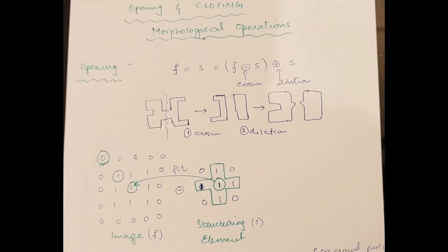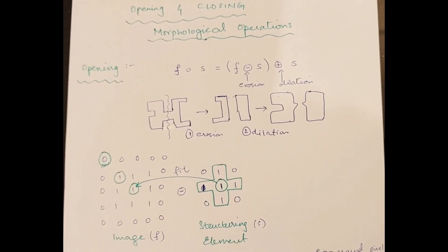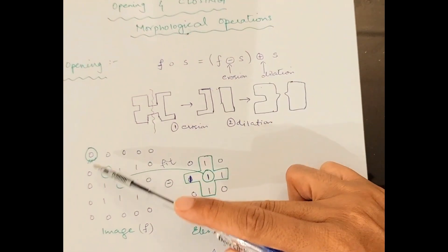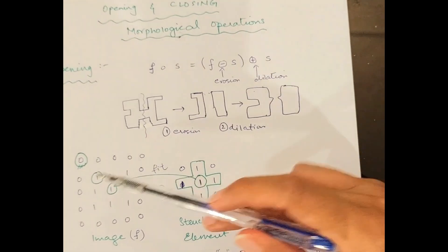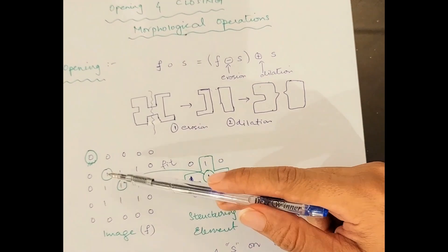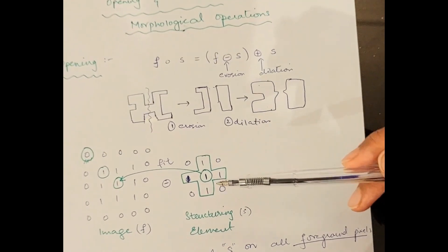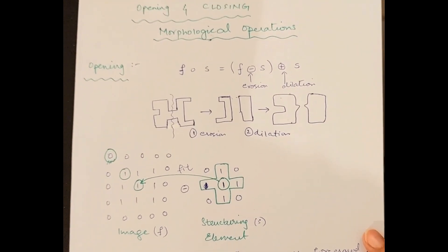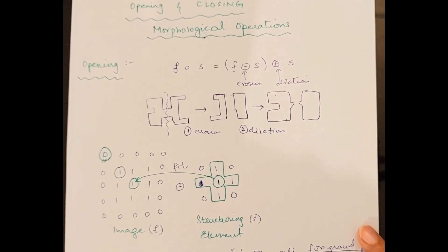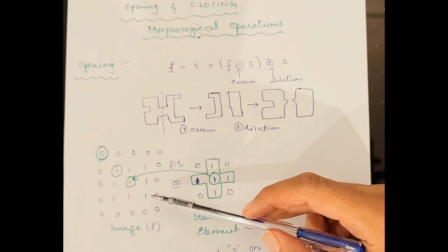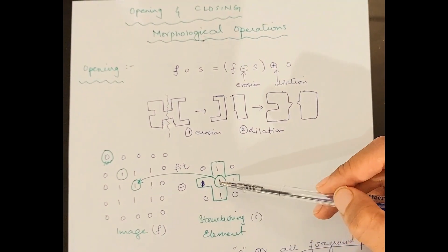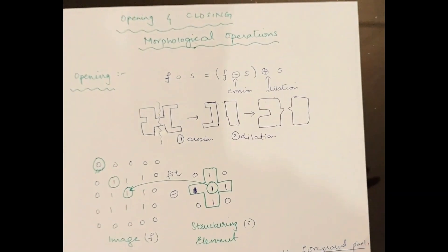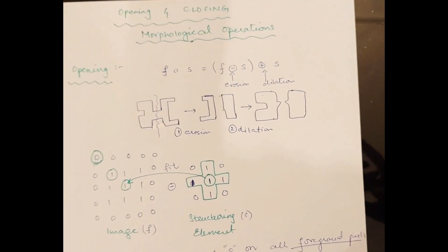Now let's solve an example to understand the opening operation. We have an image f — this is the pixel representation of the image — and this is a structuring element. A structuring element is a window that we multiply with the image point to point, or pixel to pixel, and with the help of that multiplication the morphological operation is performed on the image. The structuring element itself does not change; whatever happens, happens to the image.